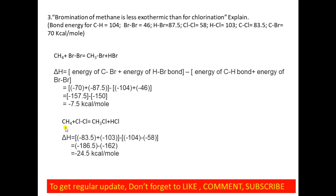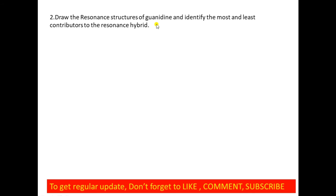Applying the same formula for chlorination of methane gives −24.5 kcal/mol. The energy released during chlorination is therefore much greater than during bromination. That is why bromination of methane is less exothermic than chlorination. Here, exothermic means energy is released rather than absorbed in the reaction.